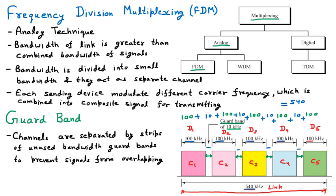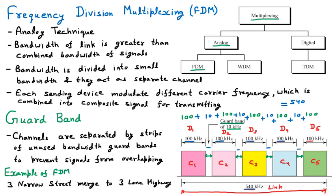Now talking about an example of frequency division multiplexing: three narrow streets merging into a three-lane highway. If three small streets are combined together into a three-lane highway, that is the example of FDM. Three roads are merging into a three-lane highway — meaning if each road has a capacity of 10, then 10 plus 10 plus 10 gives a capacity of 30 for the complete highway. This is all about frequency division multiplexing.